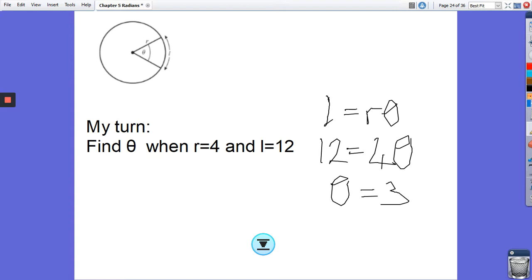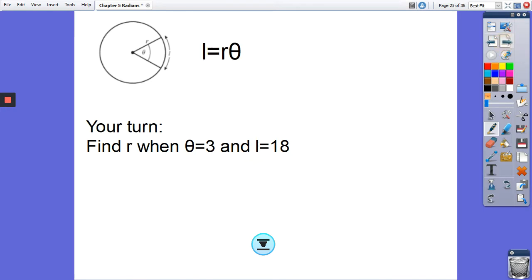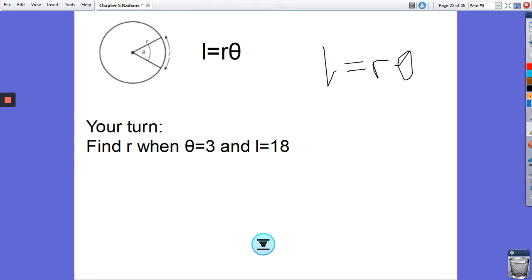Okay, you guys have a go at this next example. Press pause now and then I will do it in two ticks of a cat's tail. Okay, so we have L equals r theta, and we have 18 equals 3r, and therefore r equals 6. And we're done. It is as simple as that.